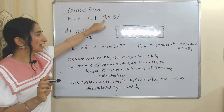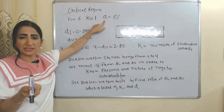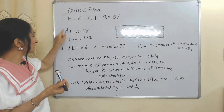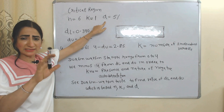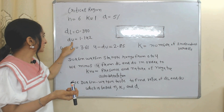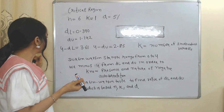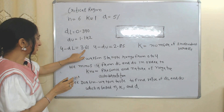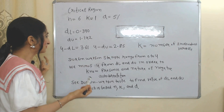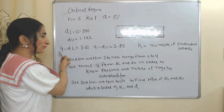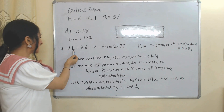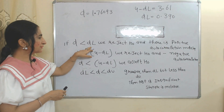Based on the values of n, k, and alpha, we use the Durbin-Watson table to find d_L and d_U, the lower and upper bounds. We also calculate 4 minus d_L, which equals 3.61, and 4 minus d_U, which equals 2.85. We subtract from 4 because the Durbin-Watson statistic ranges from 0 to 4.